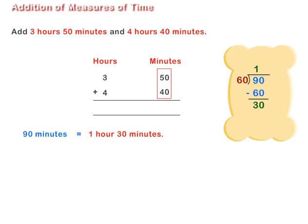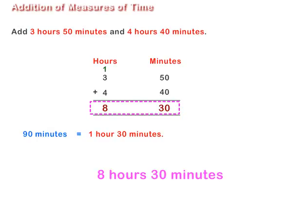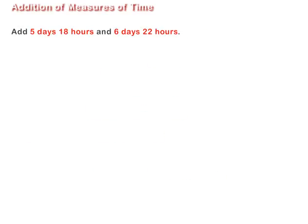That is, 1 hour 30 minutes. Carry hours to hours and add, that is, 1 plus 3 plus 4 is equal to 8 hours. Thus, the sum of 3 hours 50 minutes and 4 hours 40 minutes is 8 hours 30 minutes.